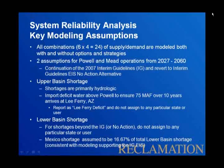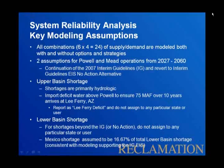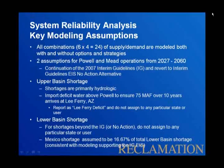We had two assumptions. The first was to extend the interim guidelines through 2060. The second assumption was that we could revert to the interim guidelines no action alternative. When thinking about shortages in the upper basin, it's important to understand that most shortages are hydrologic, meaning there's just not enough flow in a given reach to meet the demands in that area. We also had the Lee Ferry deficit metric: any time flow at Lee Ferry is less than 75 million acre feet, we report that magnitude as a Lee Ferry deficit.